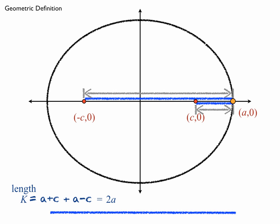So it turns out this distance, this common length, some of which the distances to the two foci always add up to, that length is 2a. So we can replace the k with a 2a now.